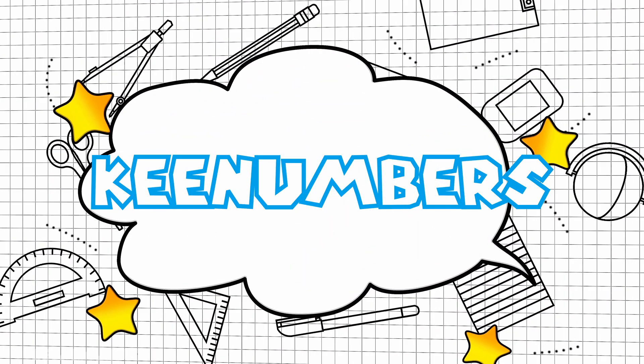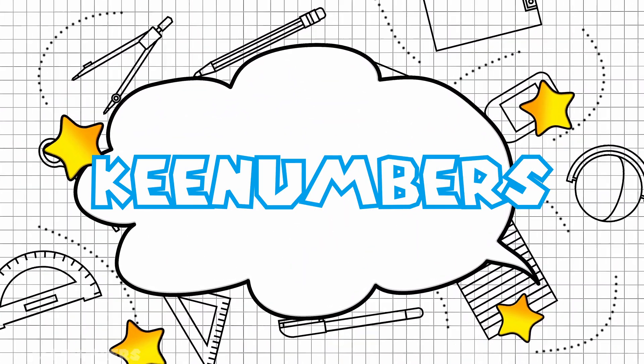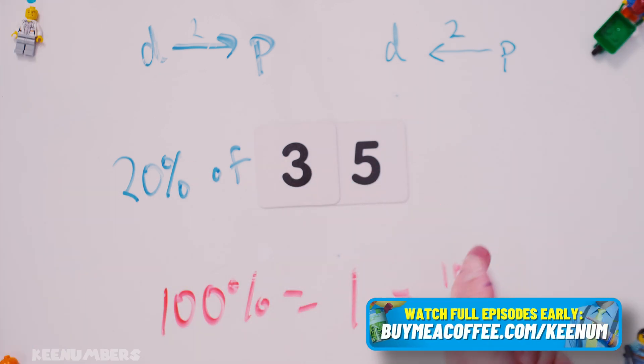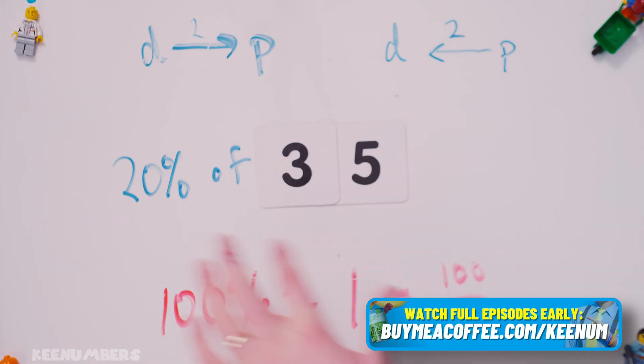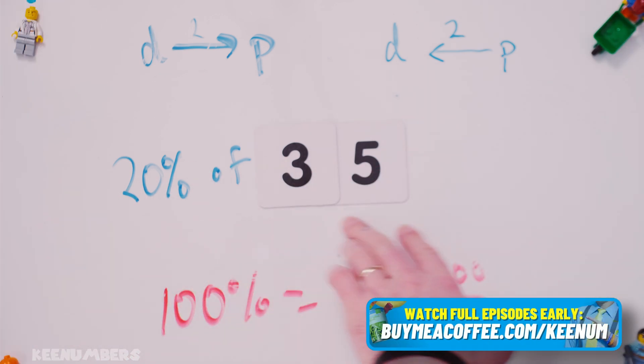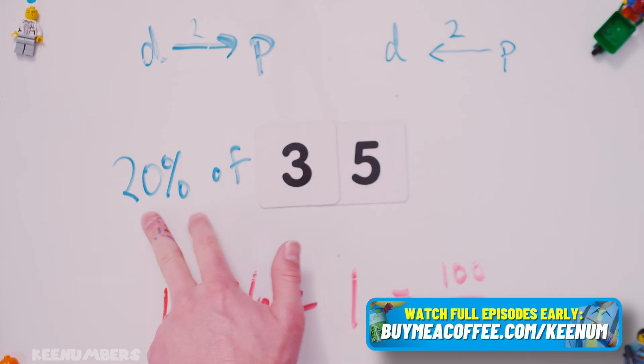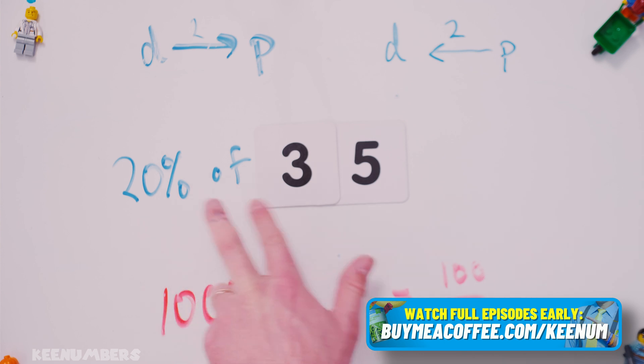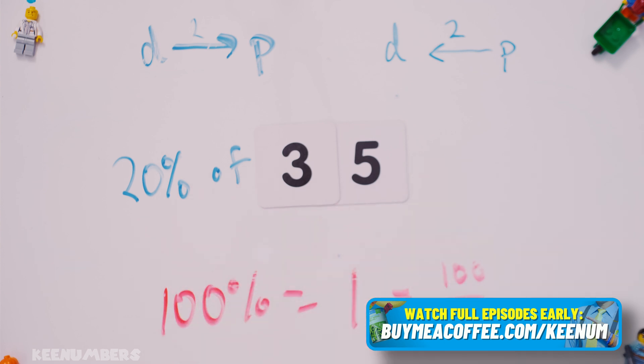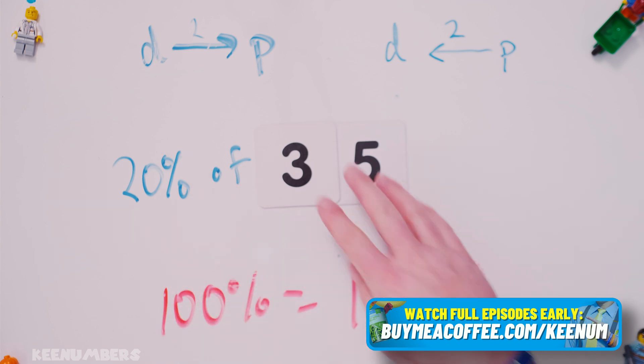Welcome to the bonus section, where all your dreams don't come true. 20% of 35. That's too easy — let's make it.